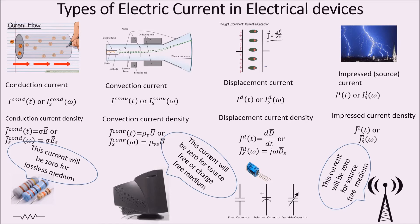Displacement current is the current due to polarization of a dielectric substance. When a capacitor is charged by connecting it to an external source, it accumulates positive and negative charges, flux lines establish, and this flux contributes to the displacement current. This type of current is always present, so you must keep the displacement current in Maxwell's equation at all times. If you have a current source, antenna, or electromagnetic source as part of your circuit, you must introduce impressed current, which will be zero if the medium or system is source-free.